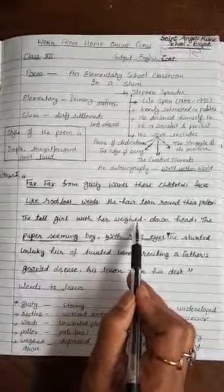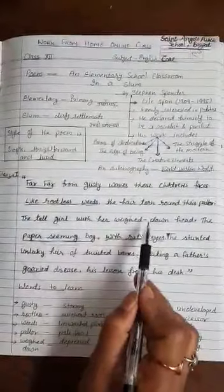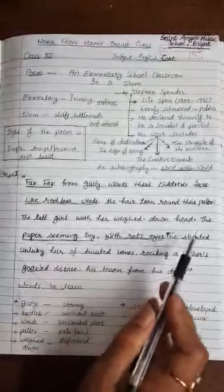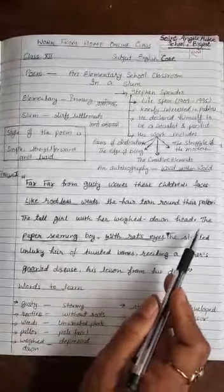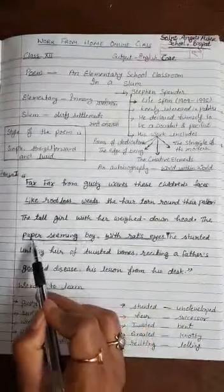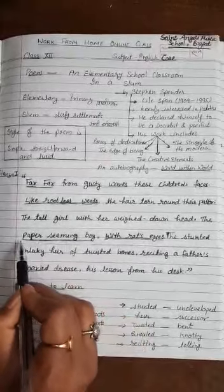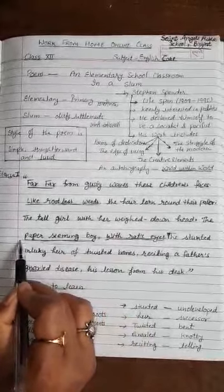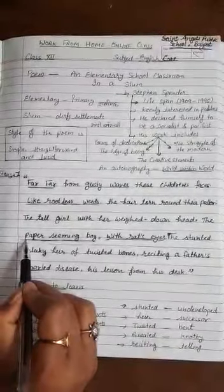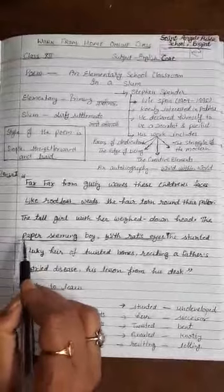The paper seeming boy. Another boy is also there. Here the paper seeming boy, the boy is looking as thin as the paper. So here poetic device is metaphor. If we find the comparison without the word like and as, then poetic device is metaphor.